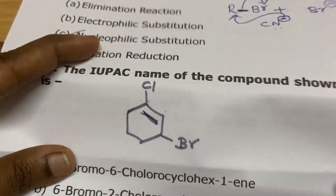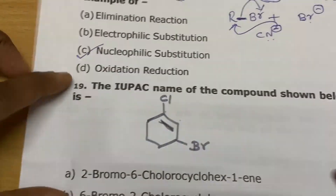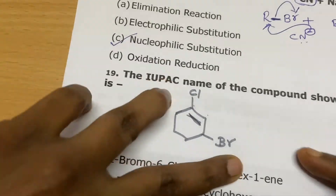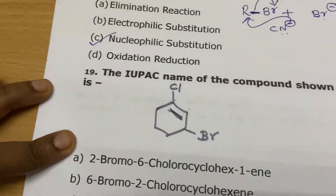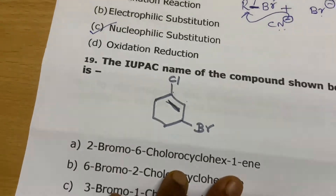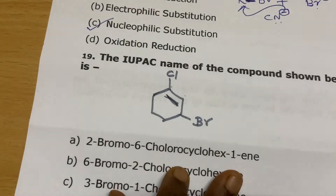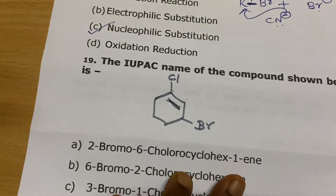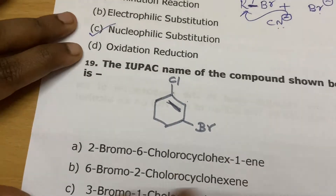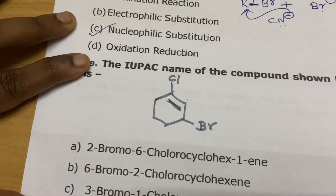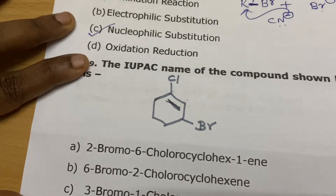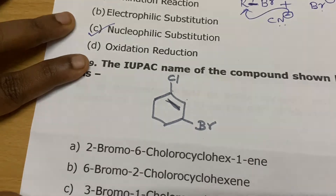The IUPAC name of the compound shown: we have to give the IUPAC name. The question is how to number this compound. We have to number in such a way that all substituents get the least possible numbers.